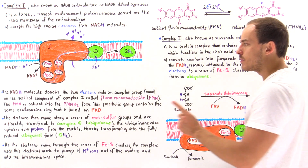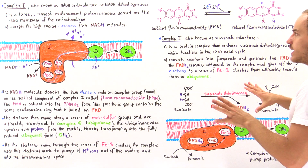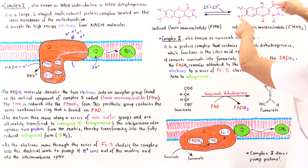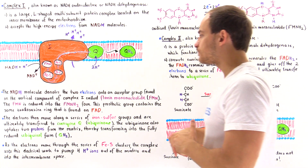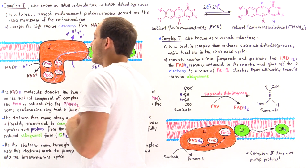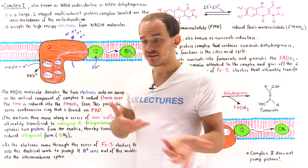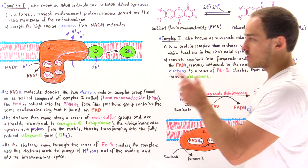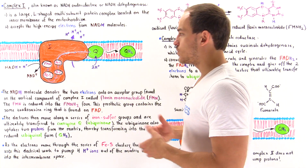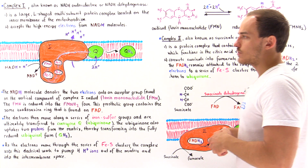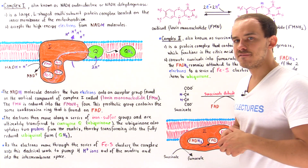FAD is similar to FMN in that they share this same three-ring structure used to extract and collect electrons. Once NAD+ is reformed, it can be reused by the citric acid cycle or glycolysis, where NAD+ molecules are needed to oxidize glucose derivatives and abstract electrons.